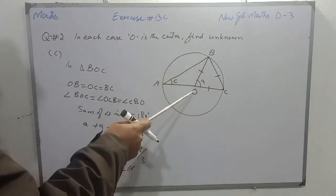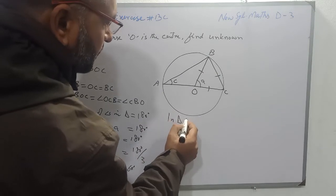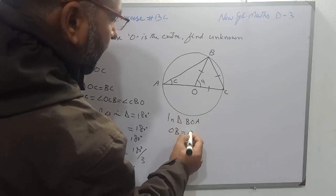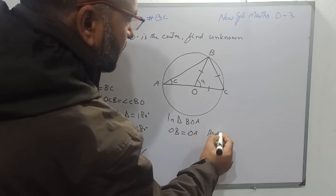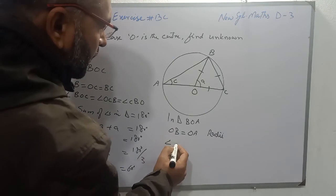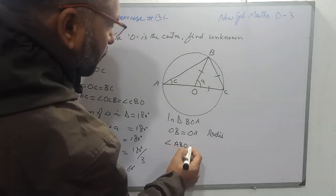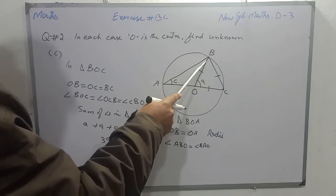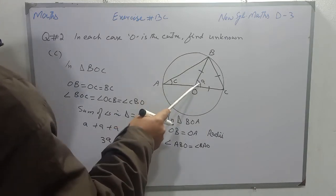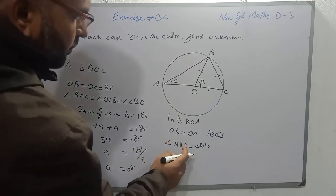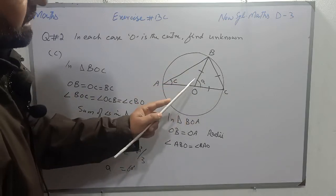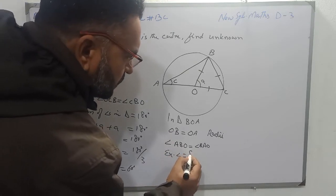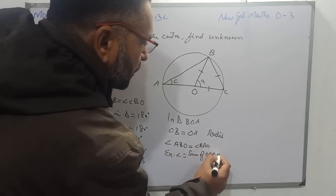Now we will discuss triangle BOA. In triangle BOA, OB equals OA — the reason is radii of the same circle. So angle ABO will be equal to angle BAO because opposite angles to congruent sides are equal. The sum of interior angles equals the exterior angle. Angle BOC is an exterior angle of this triangle, so we apply the formula: exterior angle equals sum of opposite interior angles.